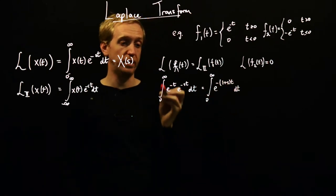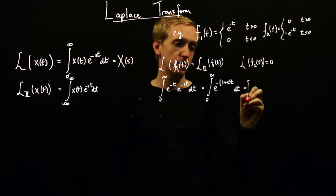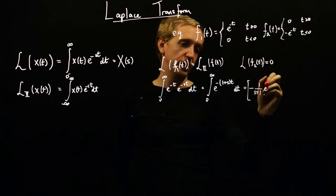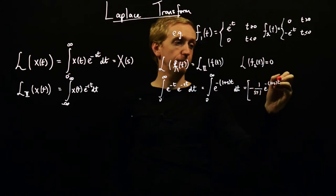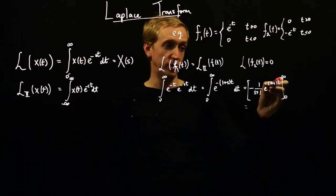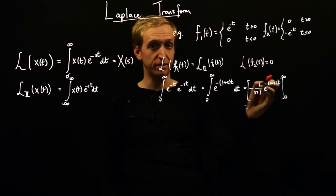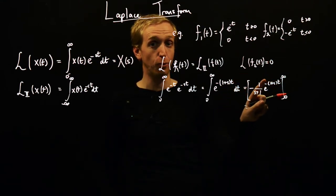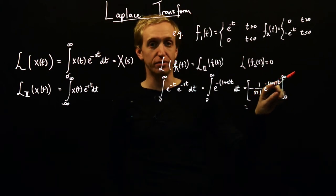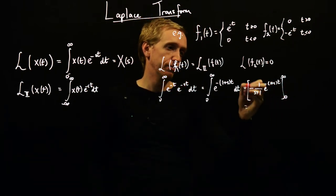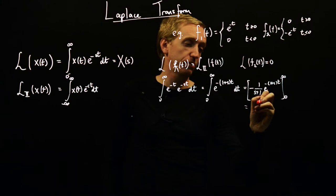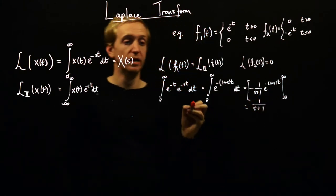Now we do the integration and we get minus 1 over (s + 1), times e to the minus (1 + s)t, evaluated at our limits 0 and infinity. As we send t to infinity, this collapses down to 0 — as long as the coefficient has a minus sign in the exponent. And when t is equal to 0, the exponential just becomes 1. So we follow all of that through and we get 1 over (s + 1). That's the Laplace transform of f1.